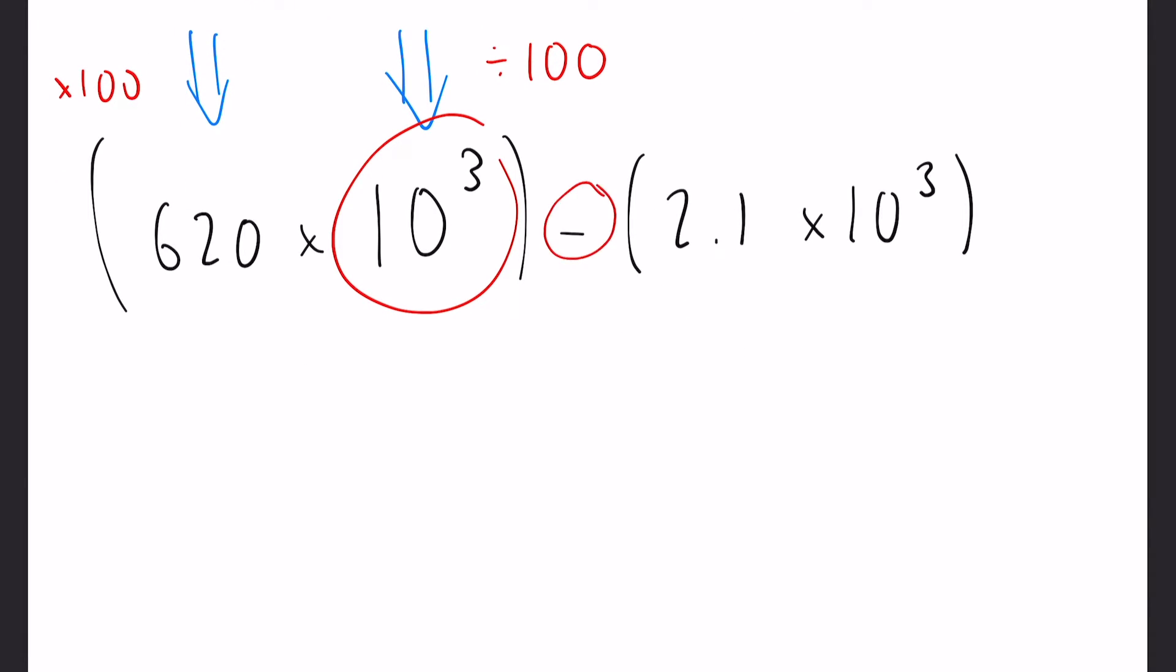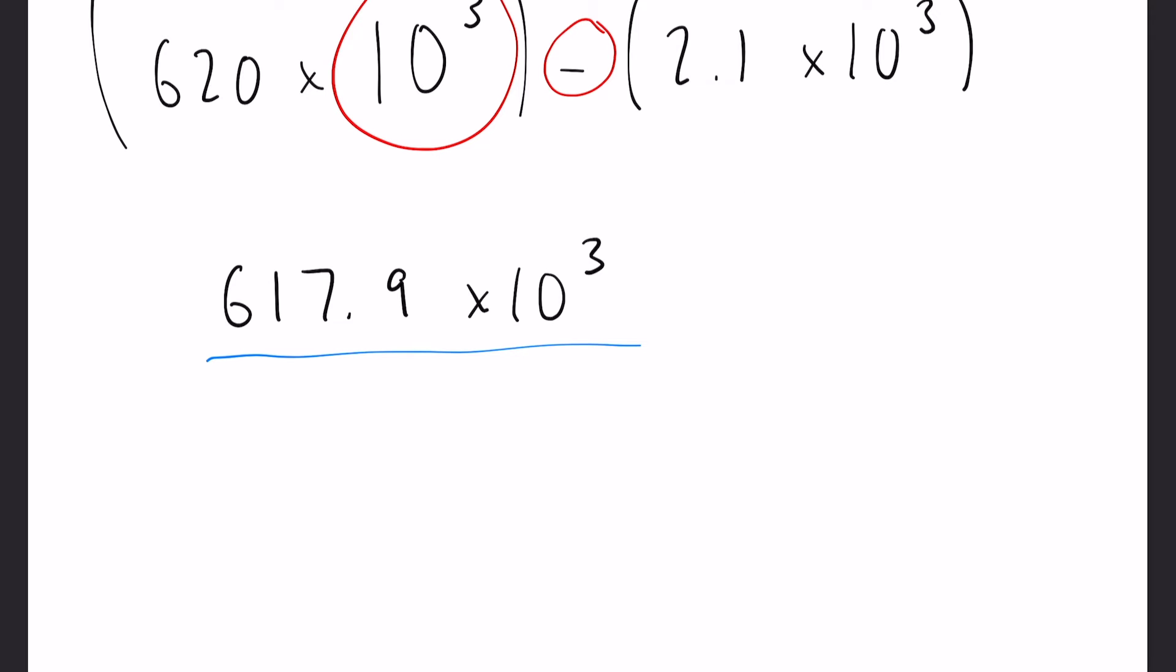So again, because we have a subtract here, we can simply subtract the two numbers. So that will leave us with 617.9 times 10 to the 3.